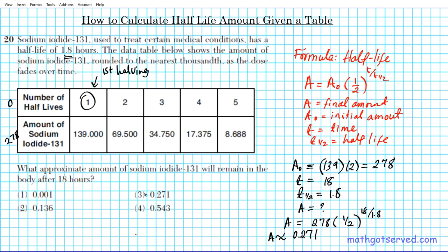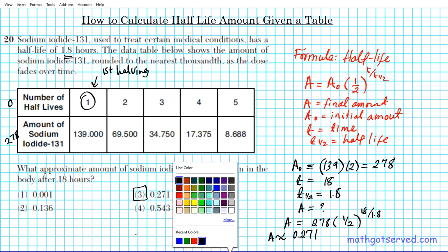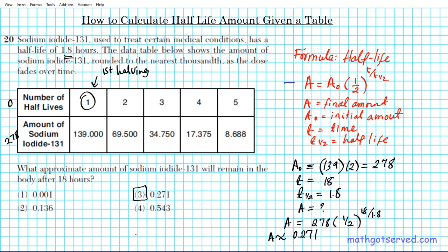The amount left is approximately 0.271. The answer to question number 20 is option number 3. A question for you that we'd like you to think about is: if you take a look at this model right here, how can you tell that this is a decay model? Can you or can you not tell? Let us know what you think. Post your response in the comment section below.